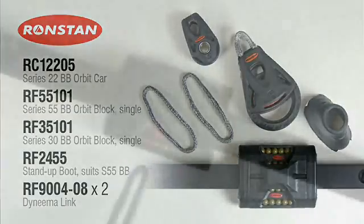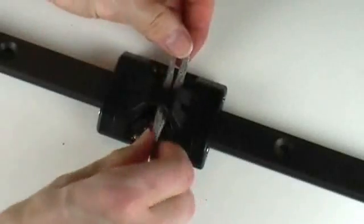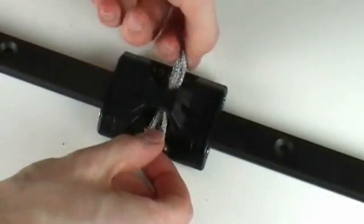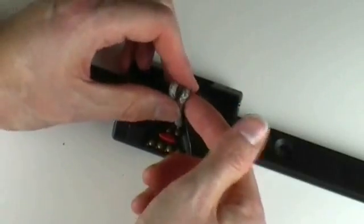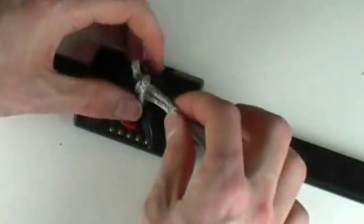The first step in the procedure is to take one of the Dyneema links, feed it through the car, rotate one end clockwise and the other anticlockwise, ensuring that the loops are running parallel with the track.